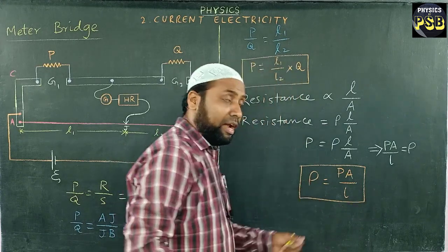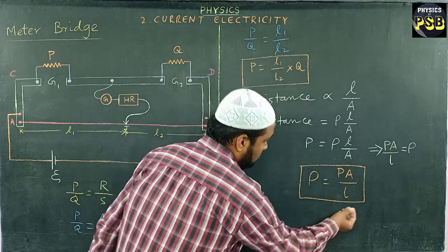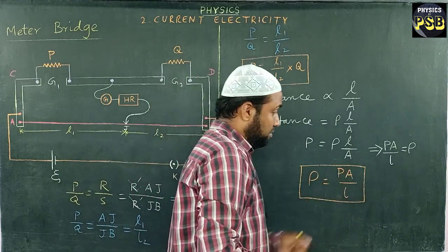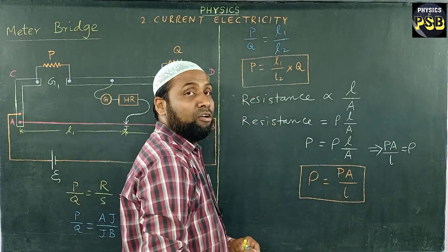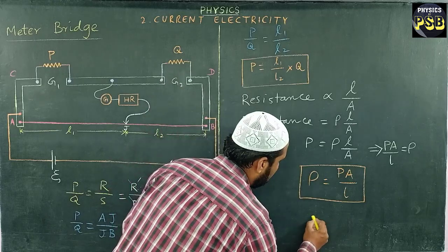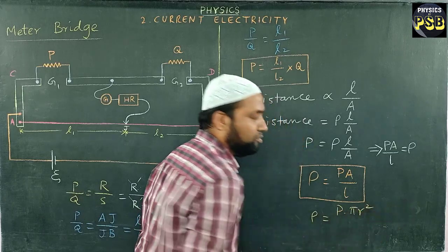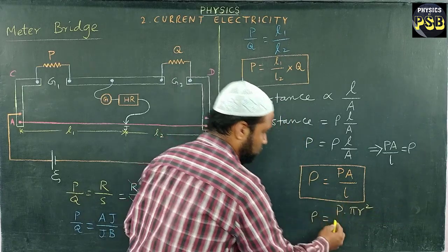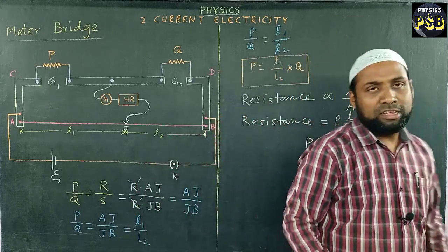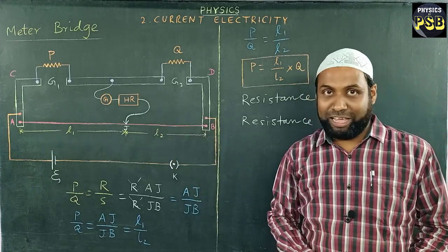Here A is area. If I mention its value, you get a new expression. In place of A, for the area there is pi r square. So rho equals P times pi r square upon L. This is the expression for resistivity of a given coil of wire.